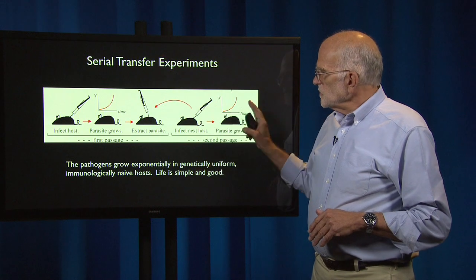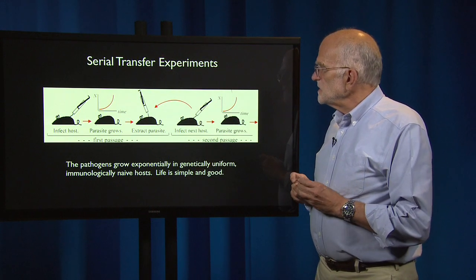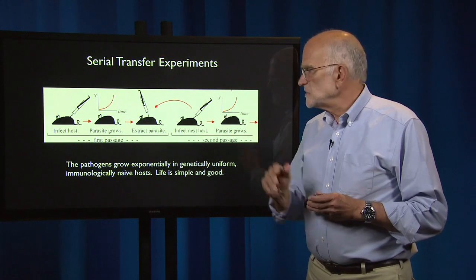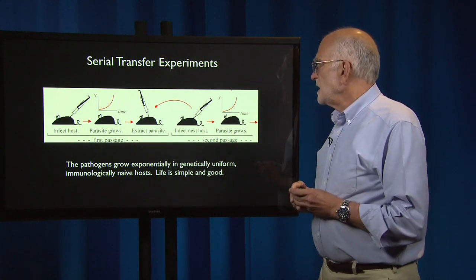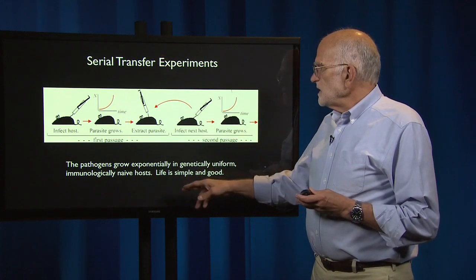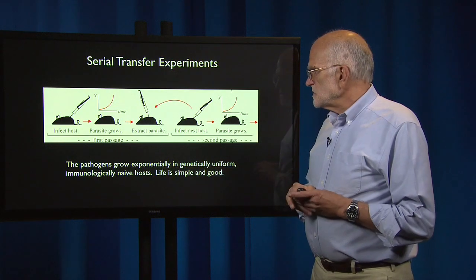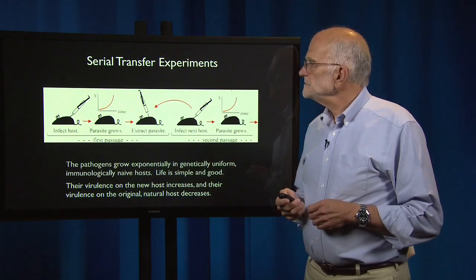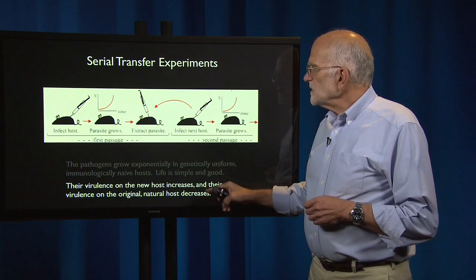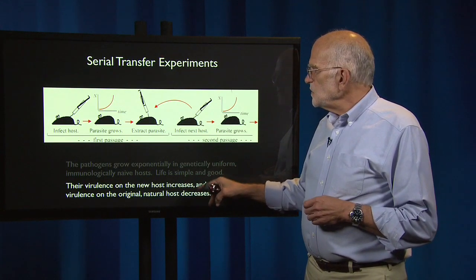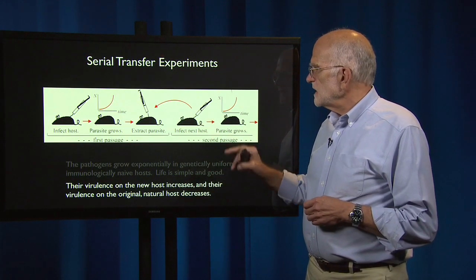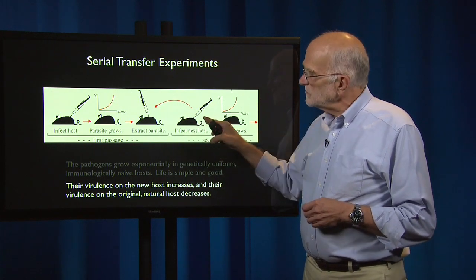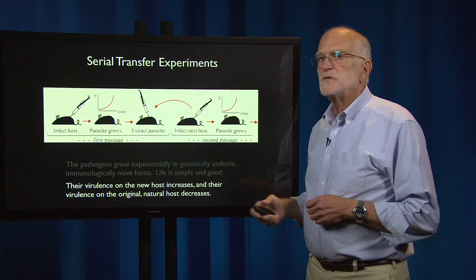From the parasite's point of view, a serial transfer experiment is exposure to an unlimited environment that is not changing, and therefore to which it can adapt very precisely. The pathogens are growing exponentially all the time because the interval between infections is kept fairly short, and they are always going into immunologically naive hosts. Their virulence on the new host then increases, and their virulence on their original host decreases.